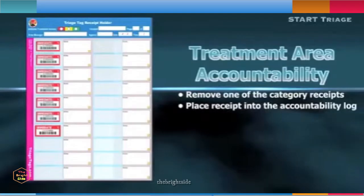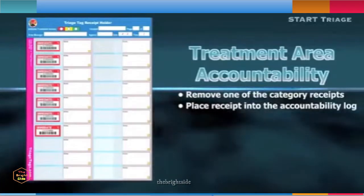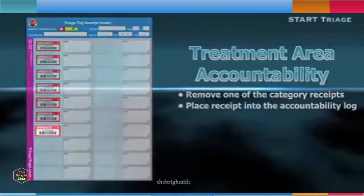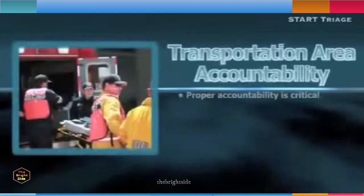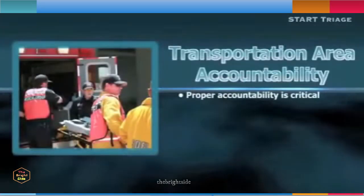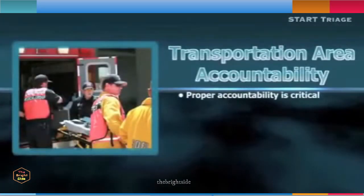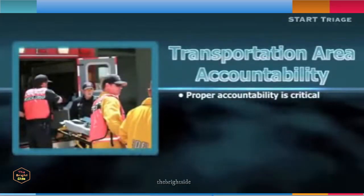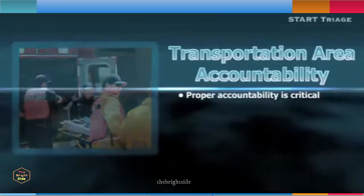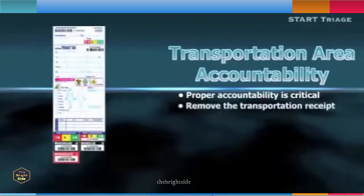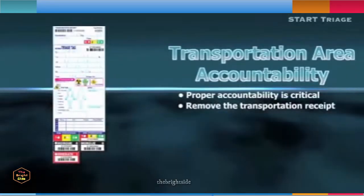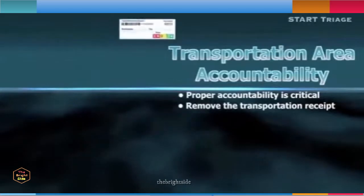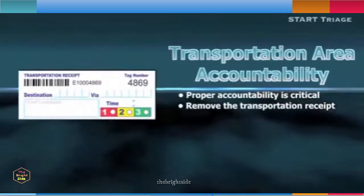Proper patient accountability in the ambulance loading area is critical for ensuring accurate bed availability counts and patient tracking. Just prior to a patient being loaded into an ambulance, the transportation receipt located on top of the DMS triage tag is removed by the transportation group supervisor or a scribe.